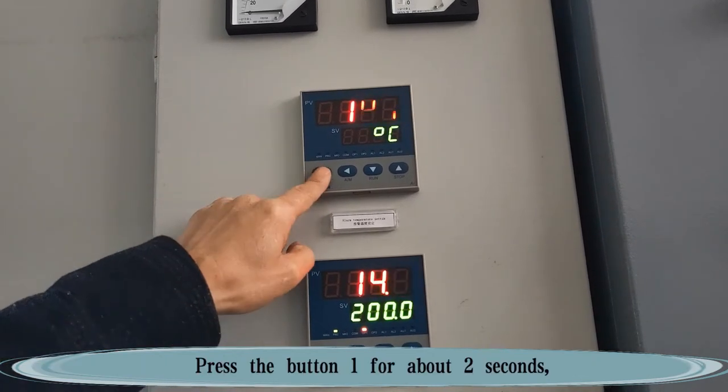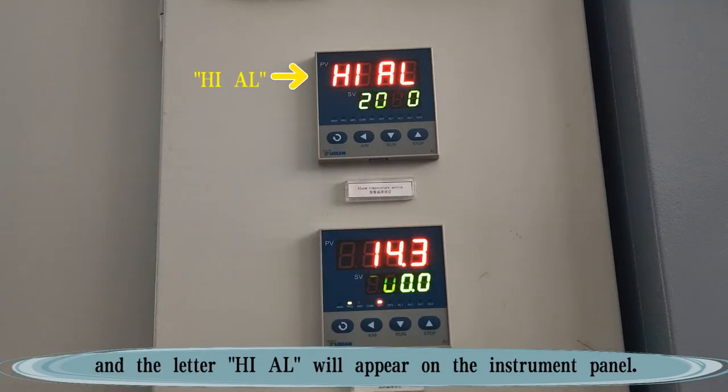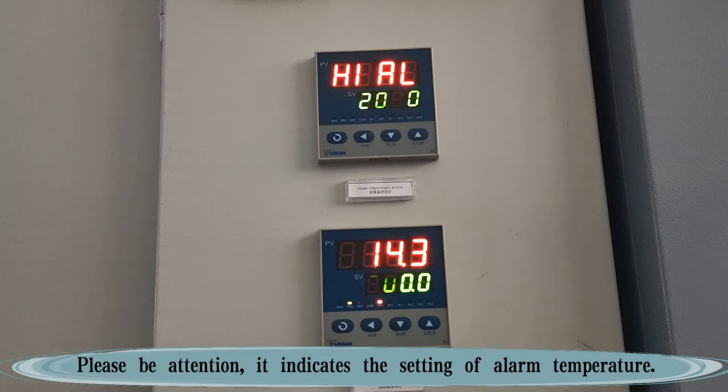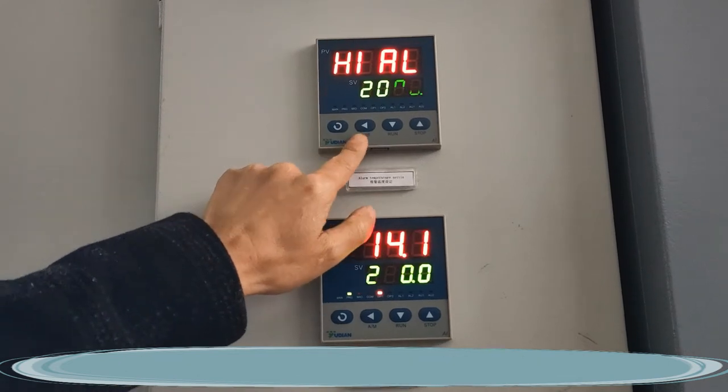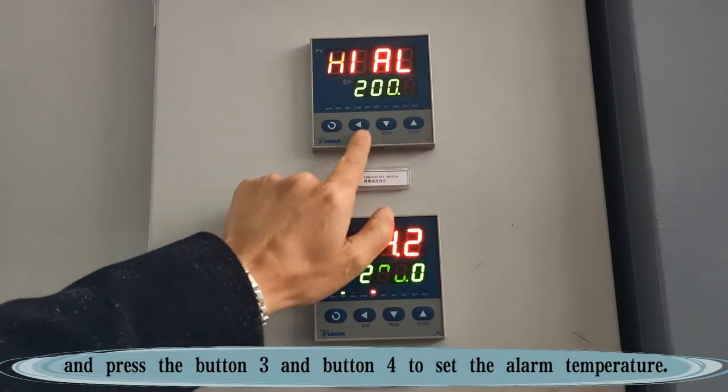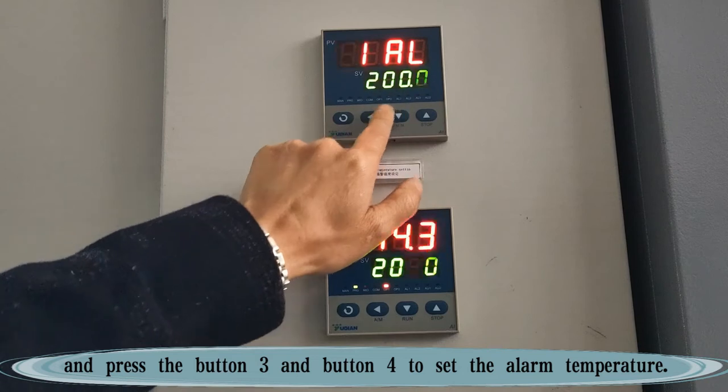Press button 1 for about 2 seconds and the letters H-I-A-L will appear on the instrument panel. Please be attentive. It indicates the setting of alarm temperature. Now we can move the cursor position by button 2 and press button 3 and button 4 to set the alarm temperature.